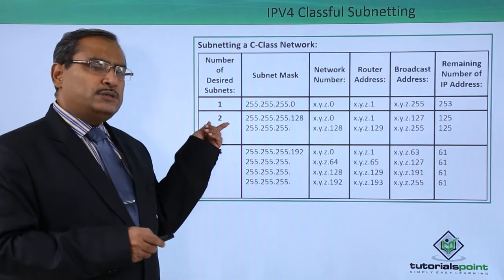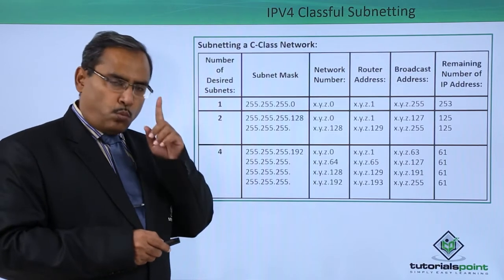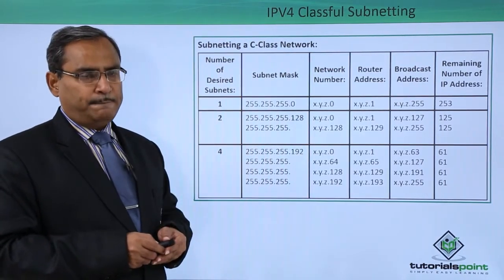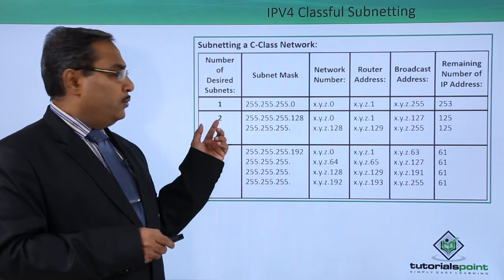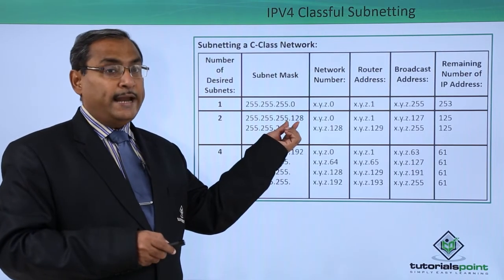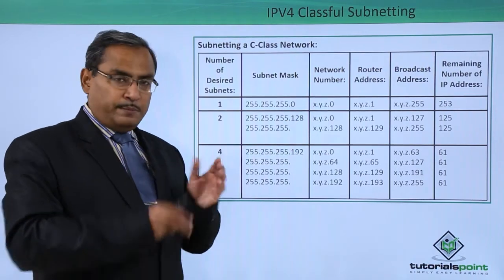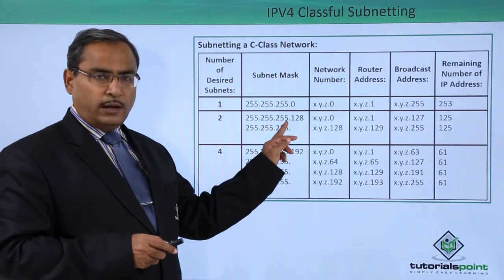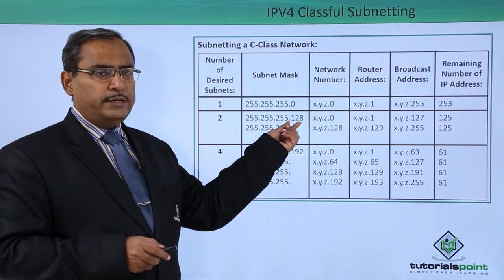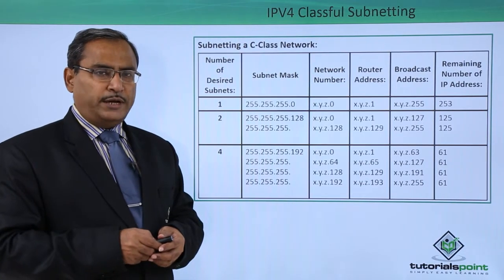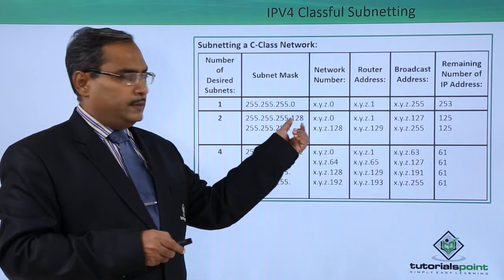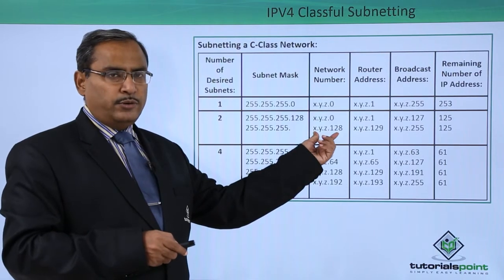Whenever we have 2 subnets, one extra administrative bit is required — its value will be 0 for one subnet and 1 for another. Along with the 24 ones in the subnet mask, we require another 1 bit for the subnet ID. All these bits must be consecutive, so the 25th bit should also be 1, making the last byte value 128. That leaves 7 bits remaining in the last byte for the host ID.